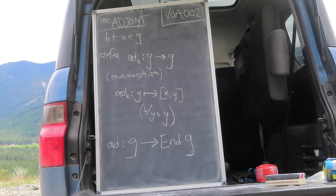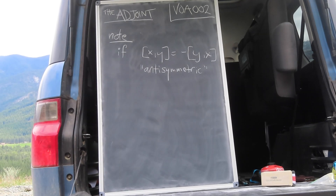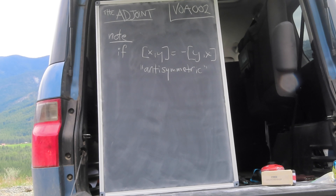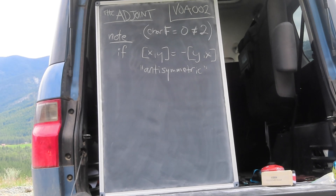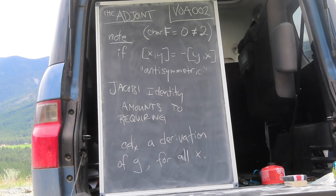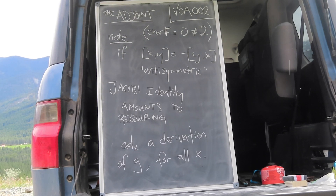Now, I'm going to follow some of the argumentation in FLM here. If the alternating property of the Lie bracket can be considered as demanding antisymmetry — which is true if the underlying field has characteristic not equal to 2, which is certainly true for every case we're considering — then we can reinterpret the Jacobi identity as the condition that ad x be a derivation of G for all x in G.